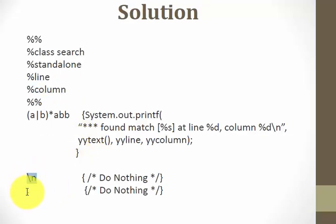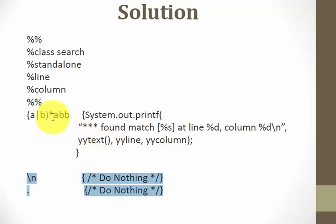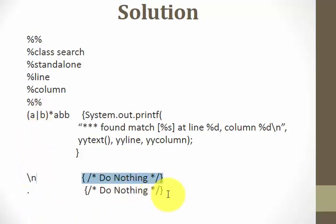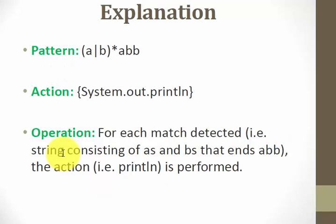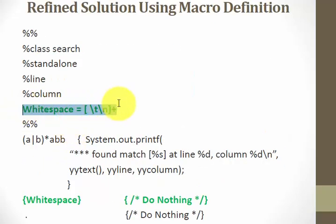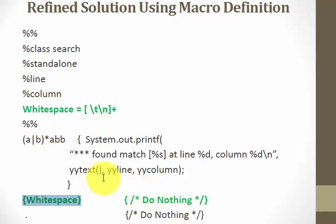There's also a rule for \n (newline) which does nothing, and a catch-all rule for any other symbol, which also does nothing. This is like a switch-case: if you find this pattern do this action, otherwise do nothing. This prevents other parts of the input from being echoed along with your matched output. Macro definitions are used in rules by enclosing the macro name in curly braces.